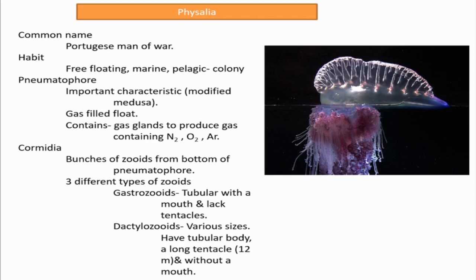Physalia is pelagic, meaning it is an organism seen in open water surface, not at the bottom — mostly in surface regions of the open sea. It is also a colonial form. The next important characteristic is the pneumatophore. The pneumatophore is actually a modified medusa — medusa being one of the two alternate forms present in Hydrozoa.